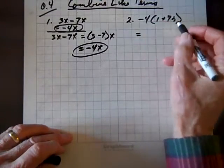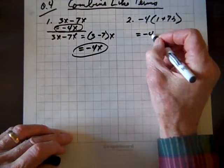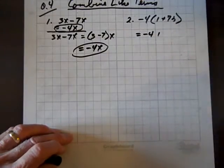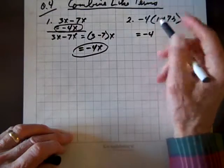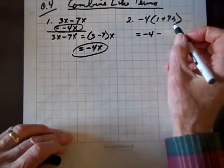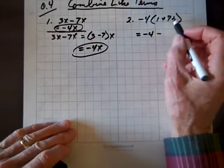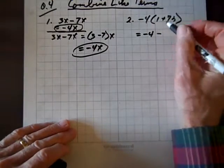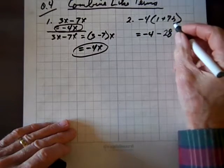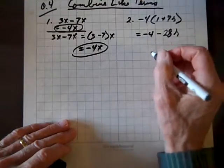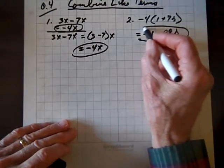But we can distribute that negative 4, and negative 4 times 1 is negative 4 plus—oh, I see, we're going to have a negative times a positive, so that'll be negative. And 4 times 7r, if we're adding, we have to have like terms. Multiplication, we don't have to have like terms, so 4 times 7 is 28, and we still have our friend r there. So there's our product.